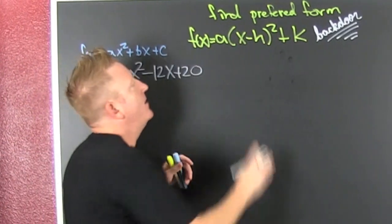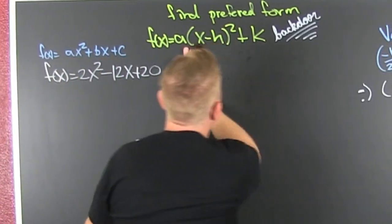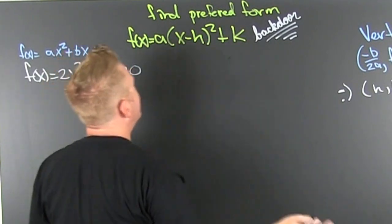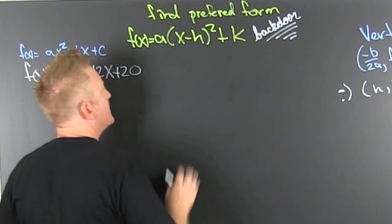And what am I trying to do? I'm trying to get it in preferred form, so I need to have it all tight and compact so that I can see my vertex and a picture of that parabola.